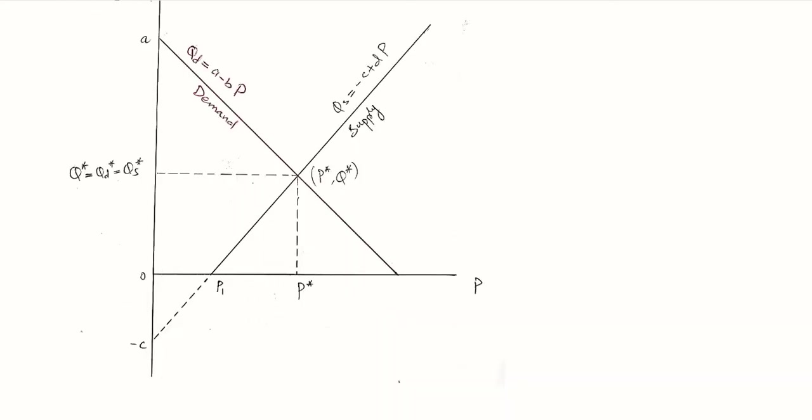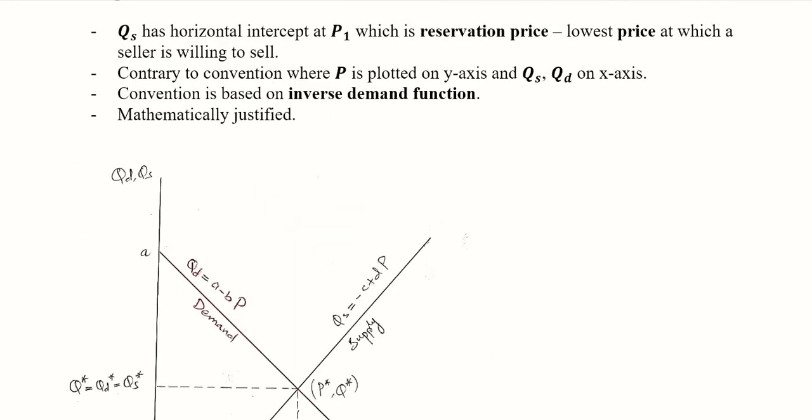The profit margin might not be there — there might be a loss in this region. We don't have a profit variable here, but it is reflecting that this is not the desirable region for the producer and definitely profit is unlikely to be there. So this is the minimum price that a seller is willing to charge.